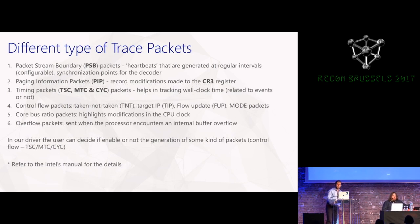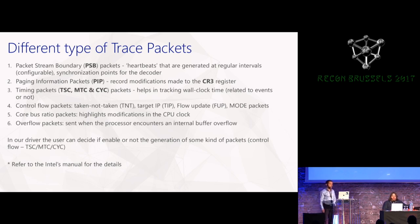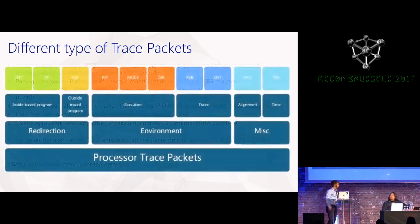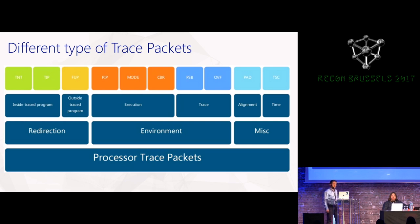Processor Trace uses different kinds of trace packets to log software execution. There are various timing packets we are not interested in. The packets we care about are the branch packets: taken/not-taken, Target IP, and Flow Update packets. With those you can trace execution of software and follow execution, even checking the assembly code. The intel manual covers the nitty-gritty details of each packet type.